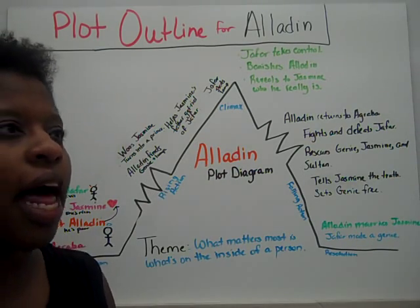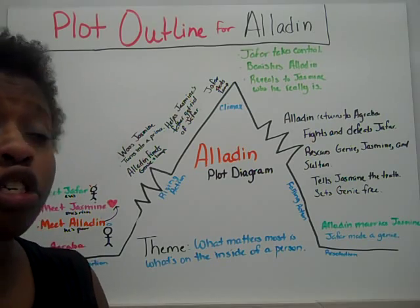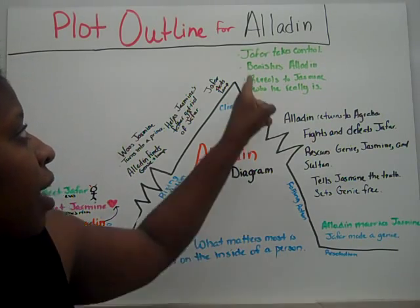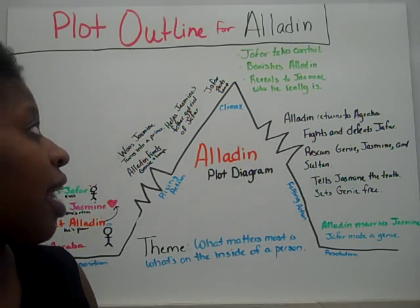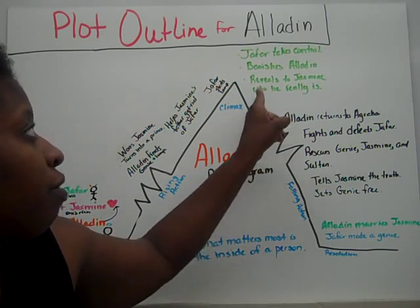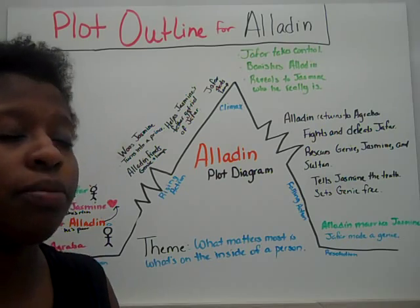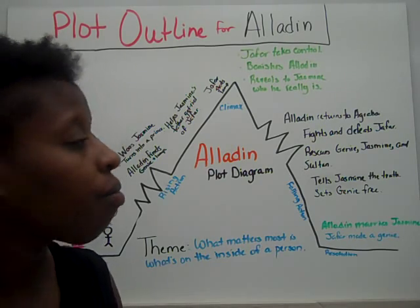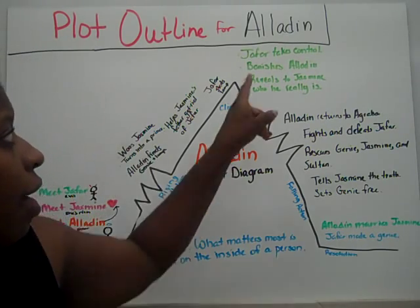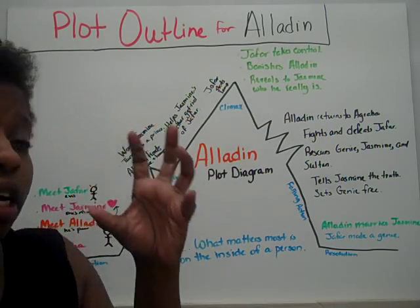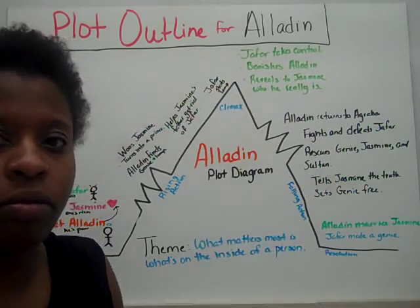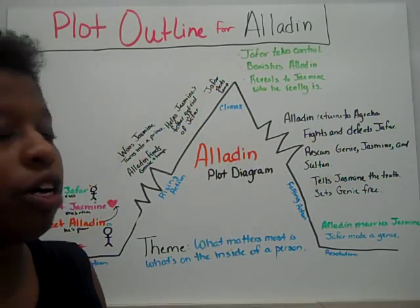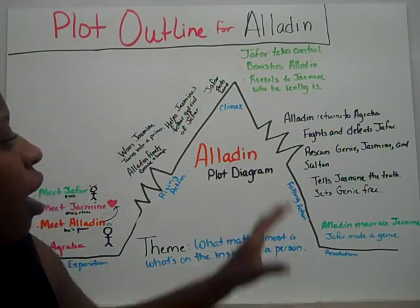In the climax of the story, Jafar takes control of Agrabah. He banishes Aladdin and reveals to Jasmine who Aladdin really is. That is the pre-battle, but that is definitely the climax of the story.